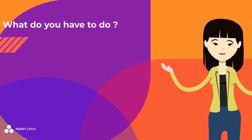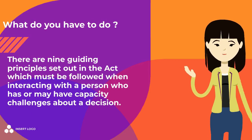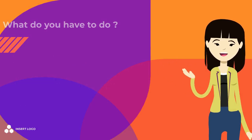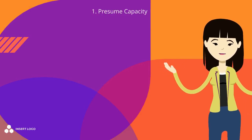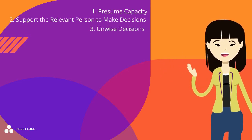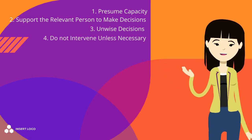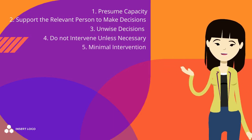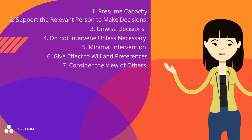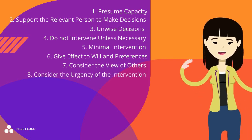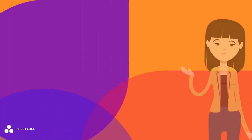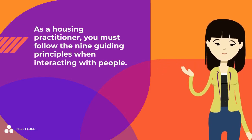What do you have to do? There are nine guiding principles set out in the Act which must be followed when interacting with a person who has or may have capacity challenges about a decision. These are: 1) Presume capacity, 2) Support the relevant person to make decisions, 3) Unwise decisions, 4) Do not intervene unless necessary, 5) Minimal intervention, 6) Give effect to will and preferences, 7) Consider the views of others, 8) Consider the urgency of the intervention, and 9) Use of information. As a Housing Practitioner, you must follow the nine guiding principles when interacting with people.